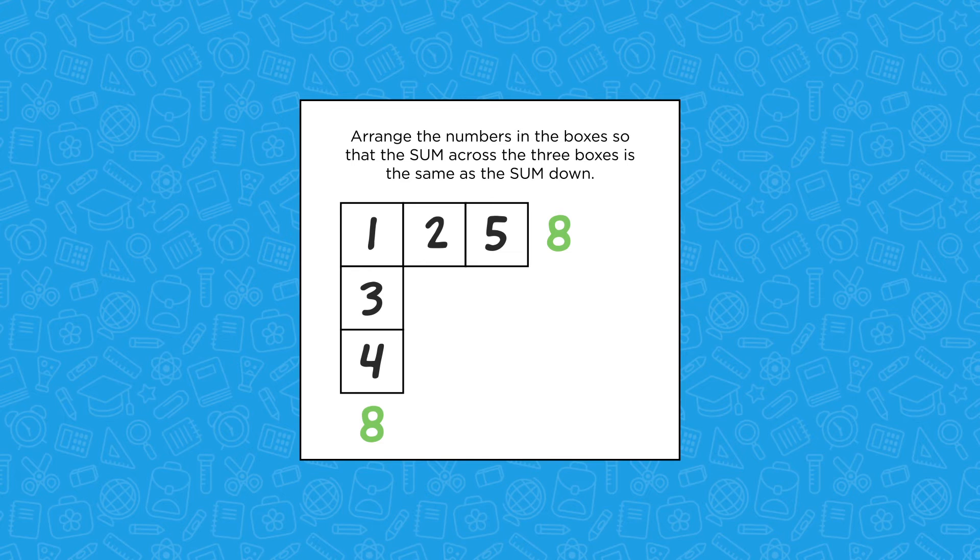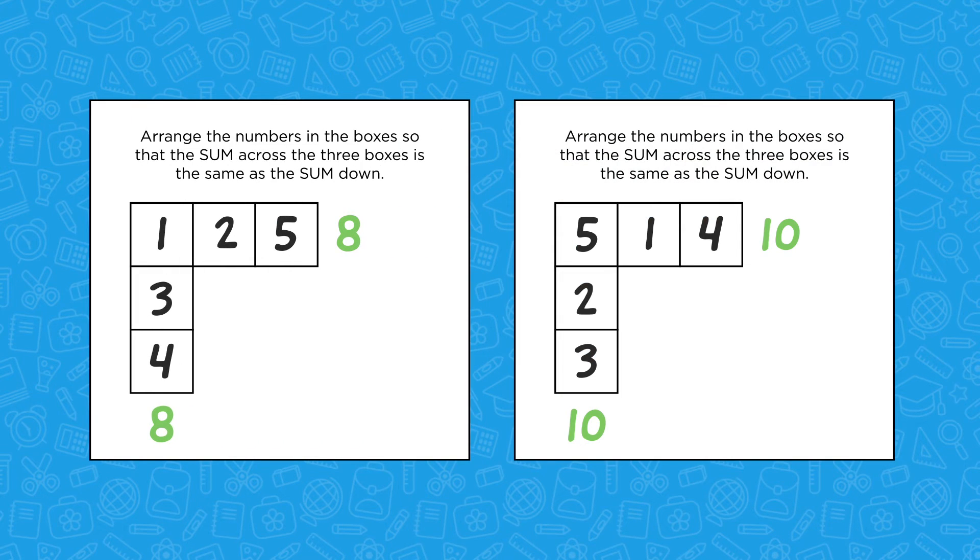But that's not the only answer. Maybe you placed 5 in the shared square, and now the sum in each direction is 10. And there are more. In fact, one of the hallmarks of rigorous questions is that there are likely to be multiple solutions.